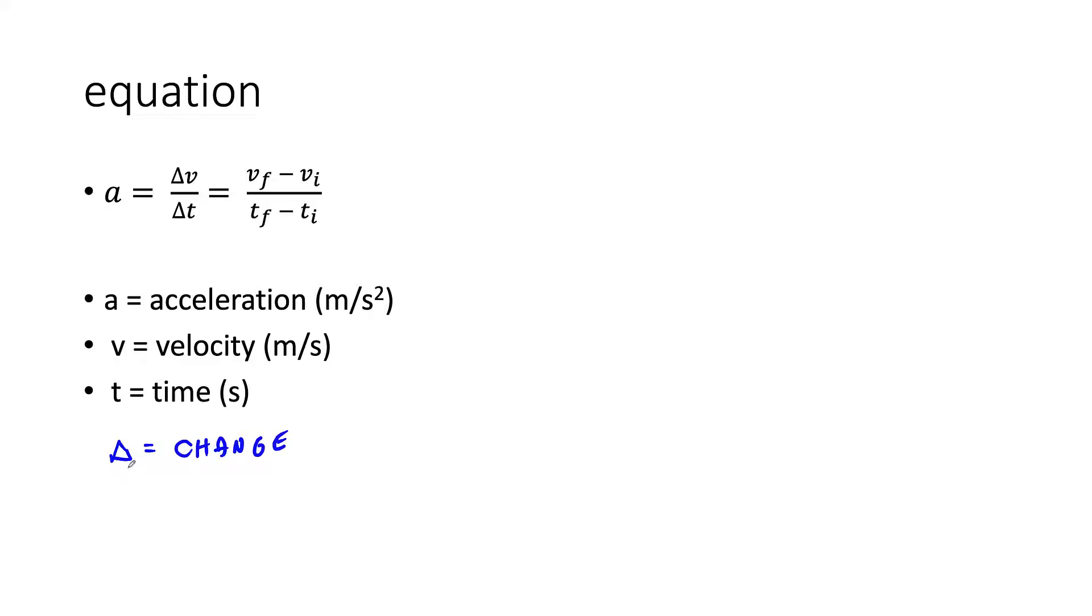This symbol makes this still one term, one variable, and it splits out to vf minus vi, that's final minus initial, and this is time tf minus ti, final minus initial.